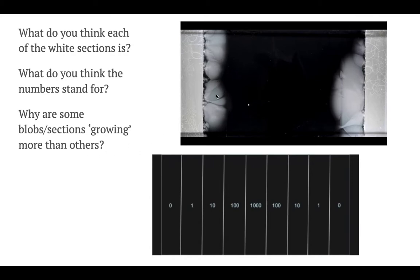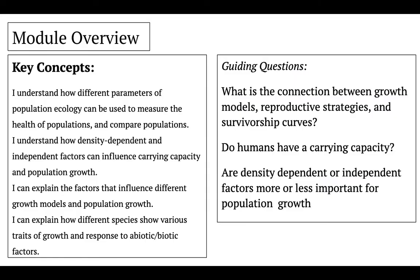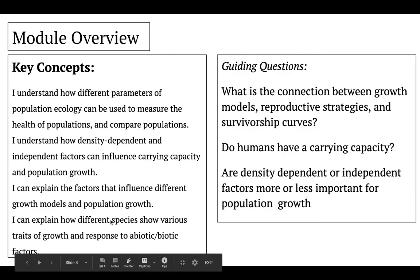This is a population of a certain species, and we're going to learn how we can apply models and data to understand their growth, their success, and what it means for humans. We're going to think about different parameters of population ecology, density-dependent and independent factors that influence carrying capacity and population growth, and look at different types of growth models to understand how populations grow and respond to different factors.